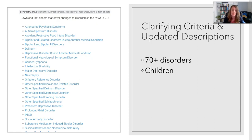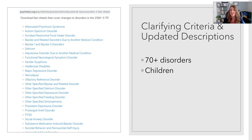Here's another example with gender dysphoria. The text was updated to use more culturally sensitive language — for instance, 'desired gender' was changed to 'experienced gender,' and 'cross-sex medical procedure' was updated to 'gender-affirming medical procedure.' Another example is with delirium: to clarify the meaning of criterion A, the phrase 'reduced orientation to the environment' was removed and changed to 'accompanied by reduced awareness of the environment' — a shift from orientation to awareness. They also added more specific language for diagnostics relevant to children, with more precise criteria especially for autism spectrum disorder, disruptive mood dysregulation disorder, PTSD, and the new prolonged grief disorder.